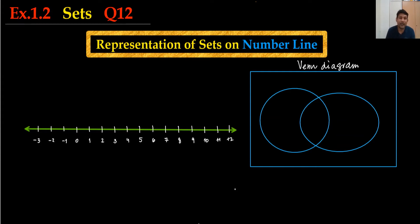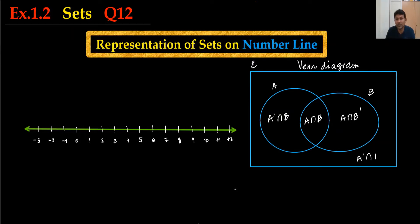All numbers are real. Now, using the Venn diagram: if this is A, this is B, and this is the universal set, then the overlapping area is called A intersection B. The area in B but not A is A complement intersection B. The area in A but not B is A intersection B complement. And the area outside both is A complement intersection B complement, also written as (A union B) complement. These areas are very important for supporting the number line with the Venn diagram.